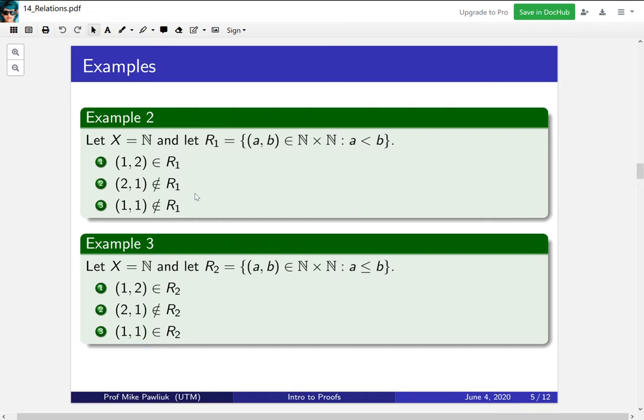Now we make a small modification. This is the same as example 2. The only difference is that instead of strictly less than, we allow less than or equal to. How will this change the pairs that are in the relation? Well, nothing changes with (1,2) and (2,1), those are still the same. But what does change is (1,1). Previously, 1 was not strictly less than 1, but 1 is less than or equal to 1. So we include it in the relation R₂.